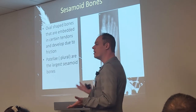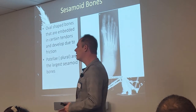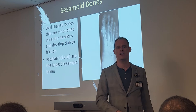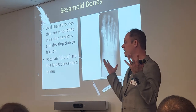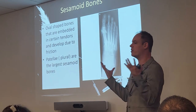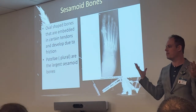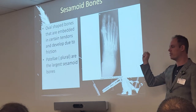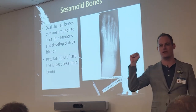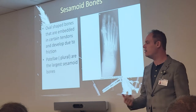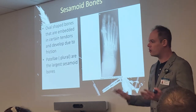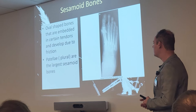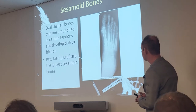You'll find sesamoid bones throughout the body — near the toes where they flex, and in the fingers as well. People who do a lot of manual labor will have sesamoid bones all around their fingers because of the increased friction. Feet develop them quite a lot because we walk on them all the time, and our knees as well.